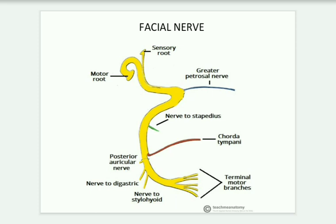From the pons, it divides into two roots: sensory and motor. These two roots travel around the internal acoustic meatus in the temporal bone, that is your inner ear. Then these two roots — sensory and motor — leave the internal acoustic meatus and enter into the facial canal, which is Z-shaped. In the facial canal, it gives some branches: the greater petrosal nerve, nerve to stapedius, and chorda tympani.